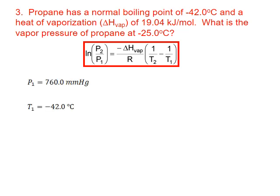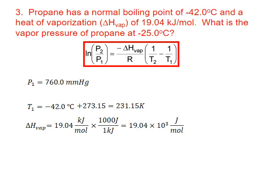We'll set the first pressure and temperature equal to the normal boiling point. Normal boiling point assumes that the vapor pressure is 760 millimeters of mercury — whenever you see the term normal boiling point, assume 760 millimeters of mercury for the associated vapor pressure. The temperature of negative 42.0 degrees Celsius is converted to kelvin by adding 273.15. The enthalpy of vaporization of 19.04 kilojoules per mole is converted to joules per mole by multiplying by a thousand. R equals 8.314 joules per mole kelvin.